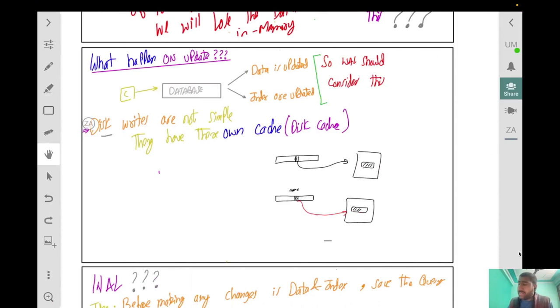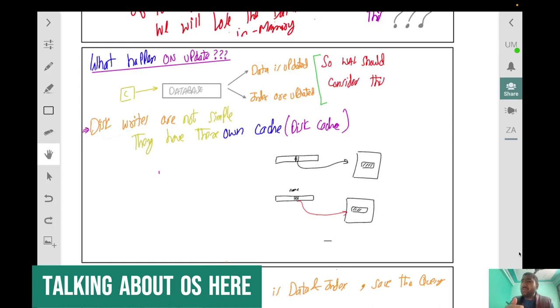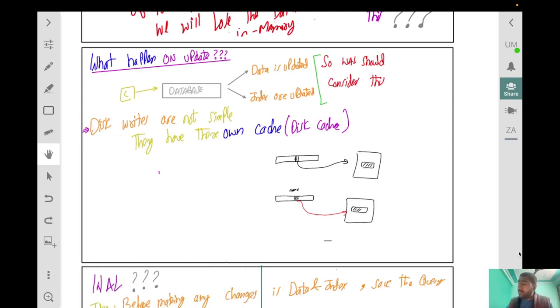The second point is that disk writes are not as simple as we think. We just tell it to write to disk but that is not how it works. It will first write the data in the disk cache, then after that it will go to the physical disk. If we do that with write-ahead log there's still a chance if it is in the cache and at that time the power is lost, it will be lost. So what we have to do is explicitly tell the operating system to put it into the physical disk.